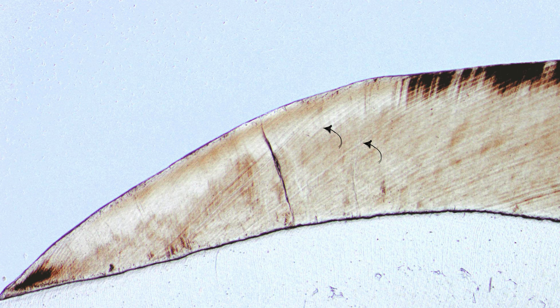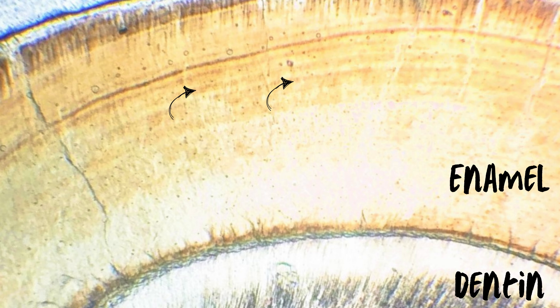Unlike other calcified tissues, enamel does not have the ability for cellular remodeling or repair, and therefore these lines remain intact after their initial formation.